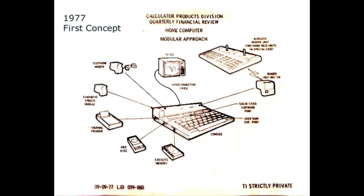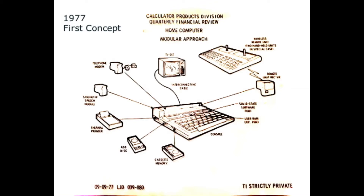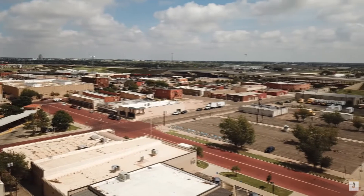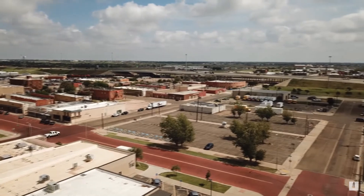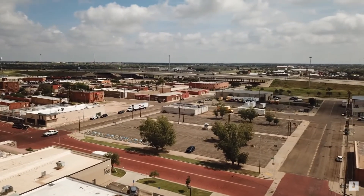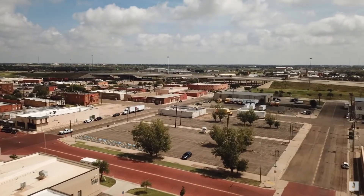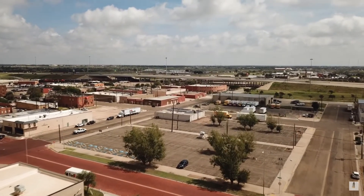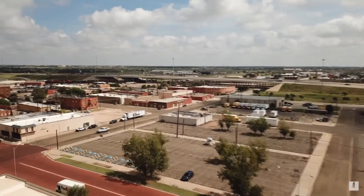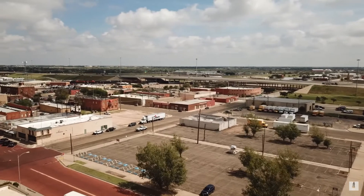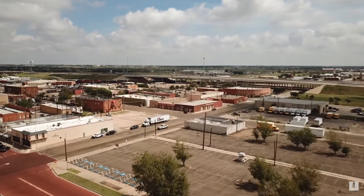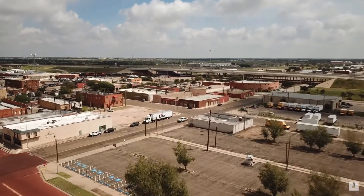By 1977, TI had decided to use this chip in their own computer. They moved from the Moss Division in Houston to the new Consumer Products Division in Lubbock. This caused another problem — getting the talent required for the project would be difficult, and much of it would come from contractors and college interns.